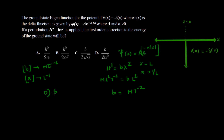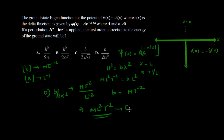Checking option D — B divided by 2α² — we get MT⁻² divided by L⁻², which gives ML²T⁻². That is exactly the dimension of energy. So option D is the correct answer. You can check the other options and you won't get ML²T⁻² for them.